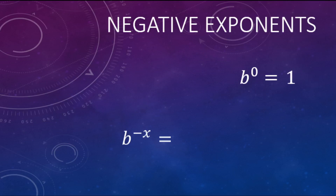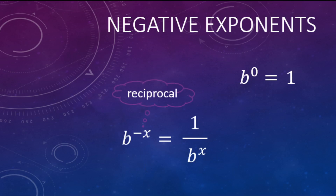Quick wrap-up: any number to the zero power equals 1, and a number or variable with a negative exponent goes to the denominator — we're thinking reciprocals. It works either way: from a negative exponent to a positive or positive to negative, the base moves between numerator and denominator. Hope that helps, and have a great rest of your day!